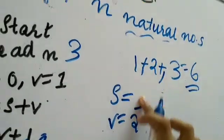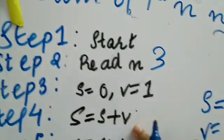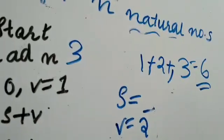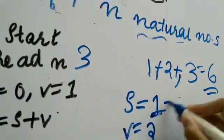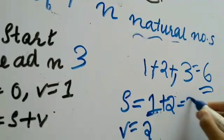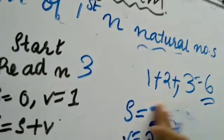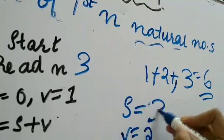What is s? The current s is 1. 1 plus v. What is the current v? 2. So 1 plus 2. That is equal to 3. So our current s is 3.